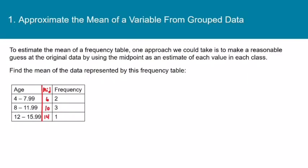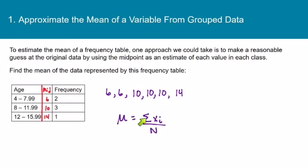Now let's make our list of numbers that will approximate our original data. The first class has two values, so I'll put six down twice. The second class has three values, so I'll put ten down three times. The third class has one value, so I'll put fourteen down once. Adding all six numbers gives 56, divided by 6, giving a mean of 9.3. Again, this is an approximation — most likely some numbers are below the midpoint and some above, and hopefully it all balances out.